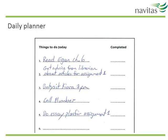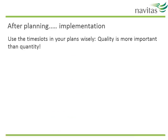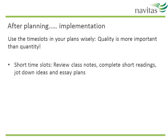The final type of planner you may find useful is a daily planner. A daily planner helps with prioritising your tasks and gives direction when you sit down to study or write. Put your most important tasks first and start others when your top tasks are complete. Also make sure the tasks are clear and specific — for example, instead of writing 'do reading for an assignment,' write 'Read Egan Chapter 6,' so it's very specific. For short time slots, check off smaller tasks such as reviewing class notes, completing short readings, or jotting down ideas and essay plans.